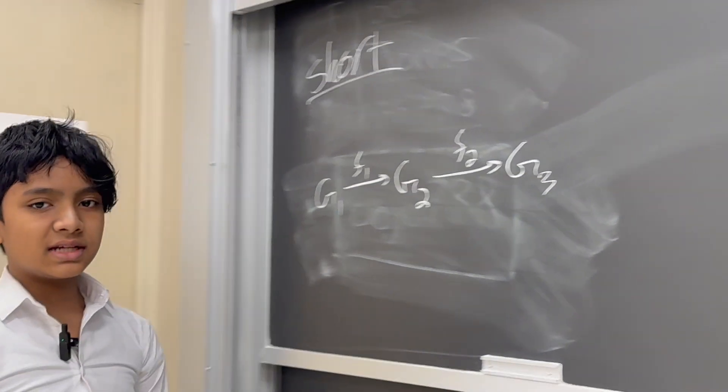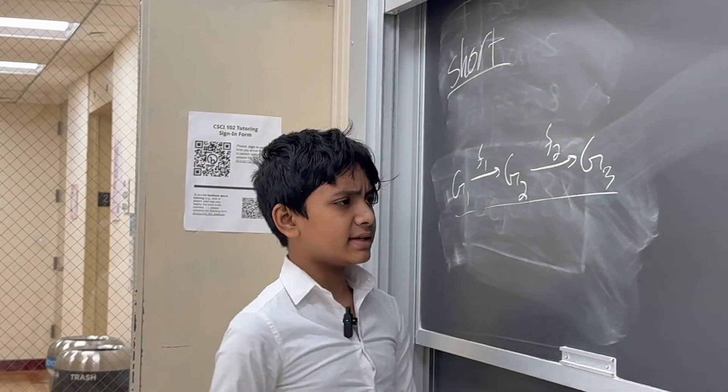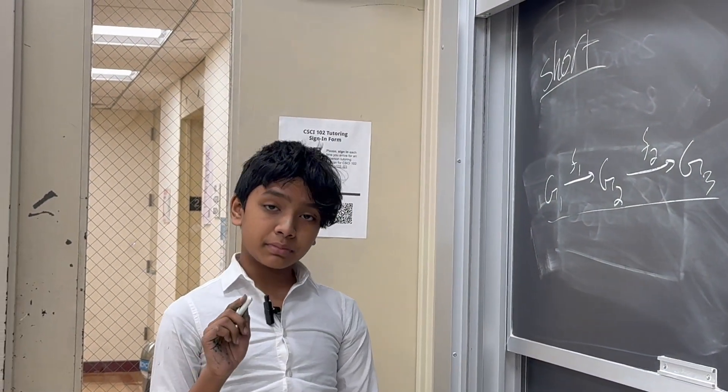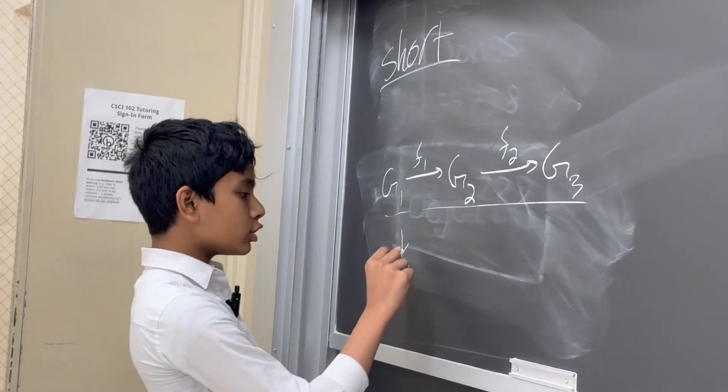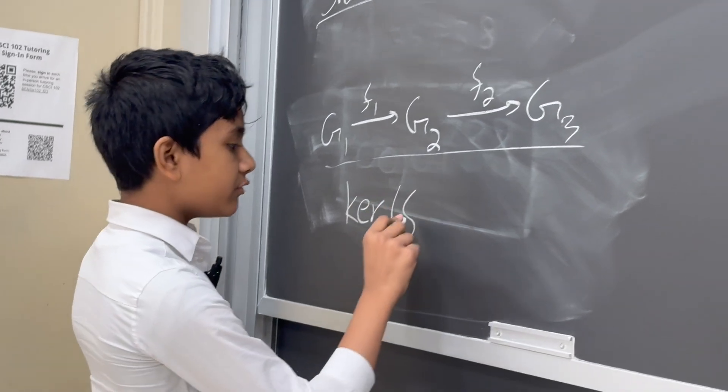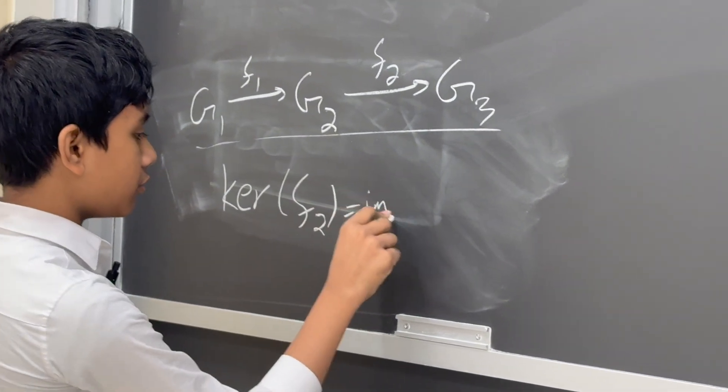Well, any sequence can look like this, have this general form, but the cool thing about the exact sequence is that the kernel of f2 is equal to the image of f1.